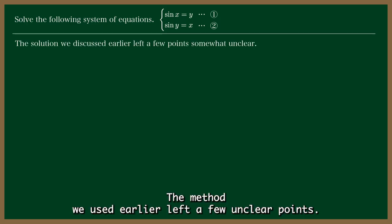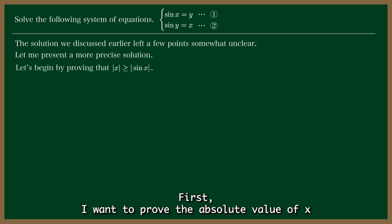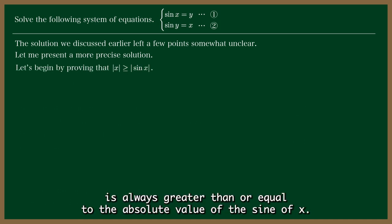The method we used earlier left a few unclear points. So let me give a more precise solution. First, I want to prove that the absolute value of x is always greater than or equal to the absolute value of the sine of x.